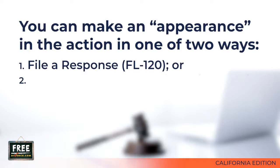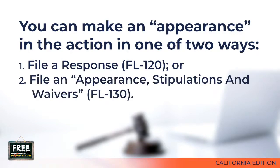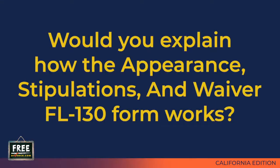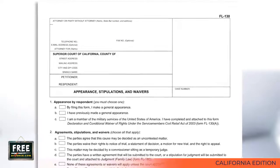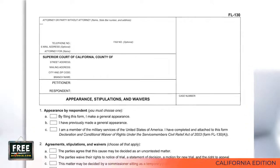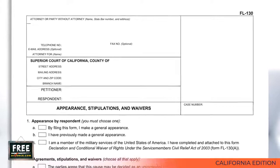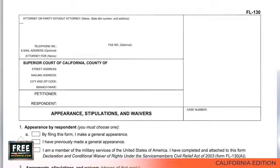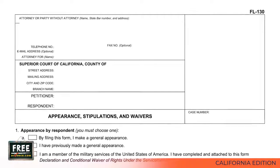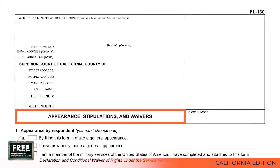If the respondent has not already filed his or her FL-120 with the court, then they can make an appearance by filing a court form called Appearance, Stipulations, and Waivers, which is FL-130. If you are processing your divorce judgment as an uncontested case, then you must fill out the Appearance, Stipulation, and Waivers form even if the respondent has filed his or her response FL-120 with the court.